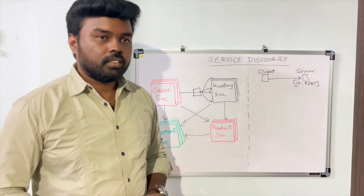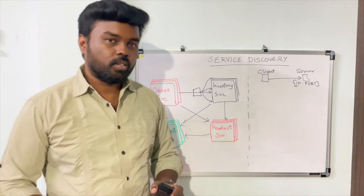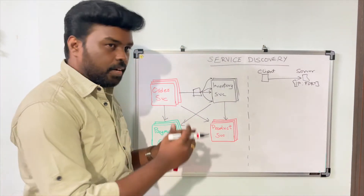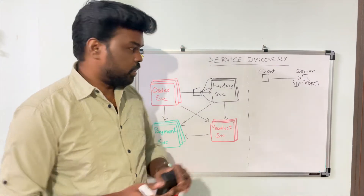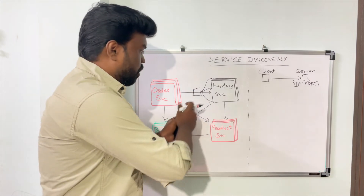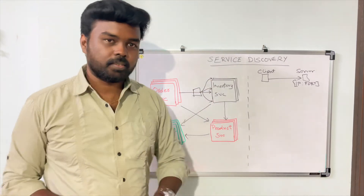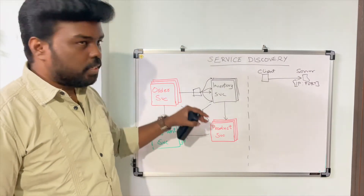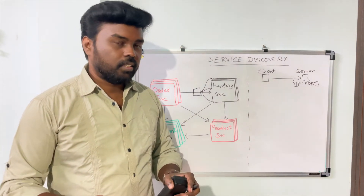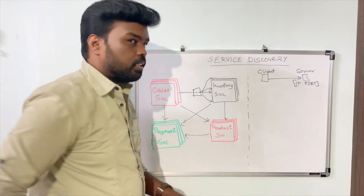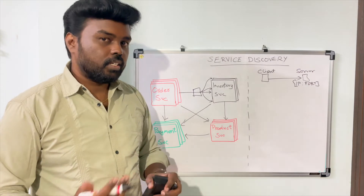Another challenge is, even if you go with the load balancer approach, how do we configure the load balancer? Usually when we have a load balancer, we have to tell it the list of server addresses where it needs to route traffic. But in a microservice design, the address of each instance is not static — it is always dynamic. Let's try to understand why it is always dynamic.